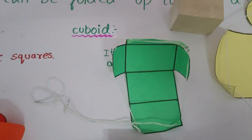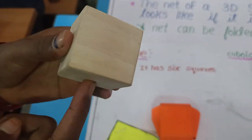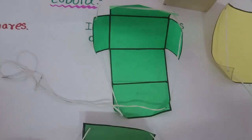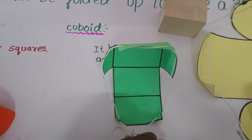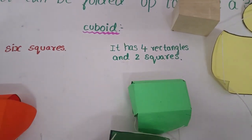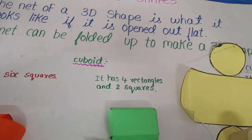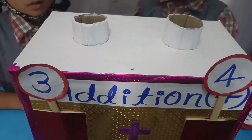The net of a cube has six squares: 1, 2, 3, 4, 5, 6.